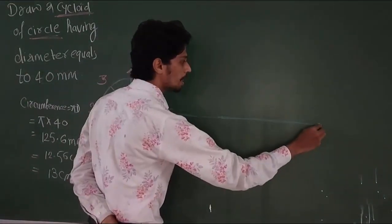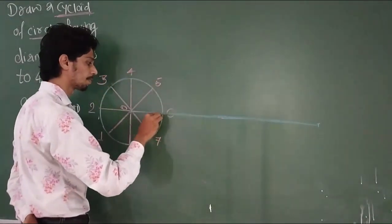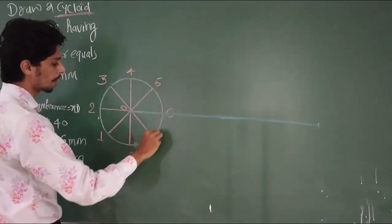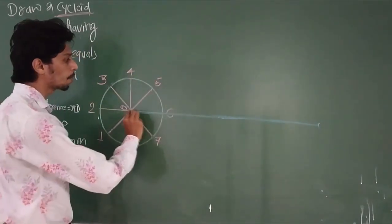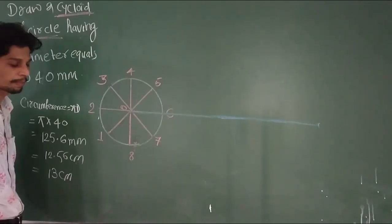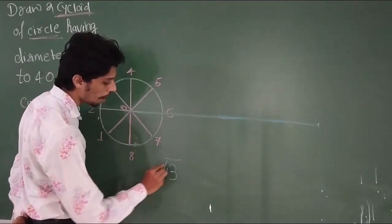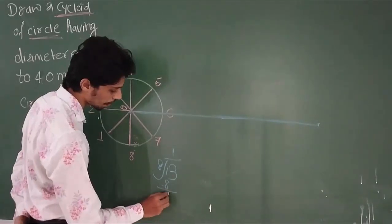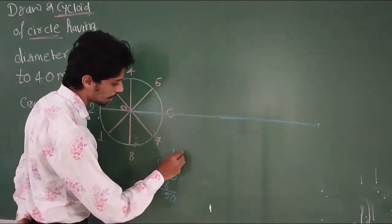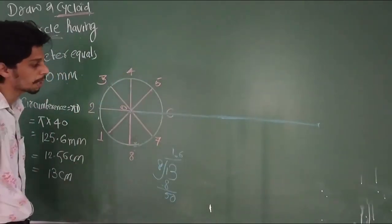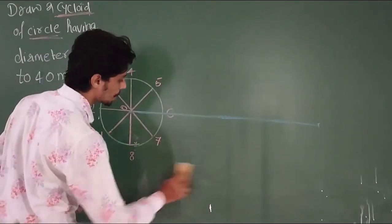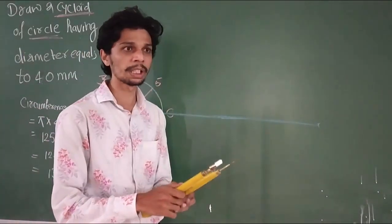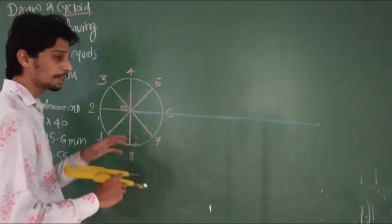Now, you have 13 cm horizontal line. You have to divide that line into equal parts, same as the circle. I will divide the line into 8 equal parts. So, 125.6 divided by 8 gives approximately 1.6 cm spacing.